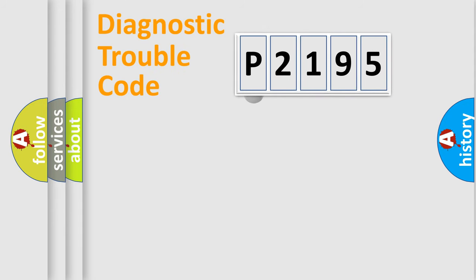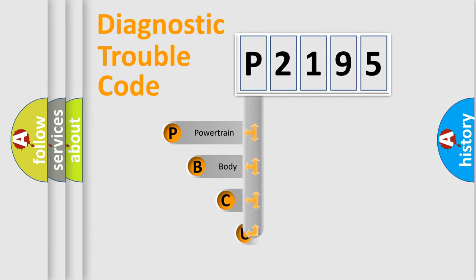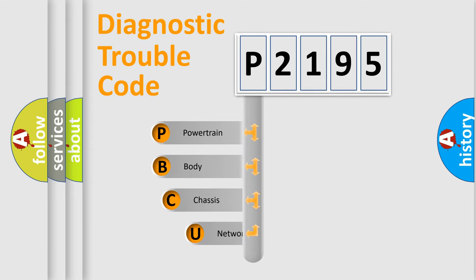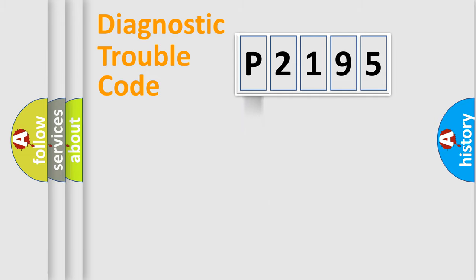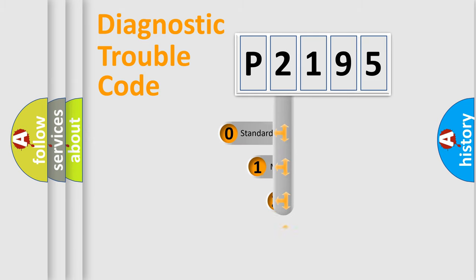First, let's look at the history of diagnostic fault code composition according to the OBD2 protocol. We divide the electric system of an automobile into four basic units: powertrain, body, chassis, and network. This distribution is defined in the first character of the code.